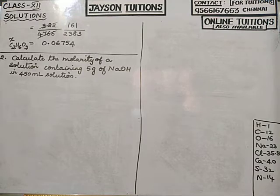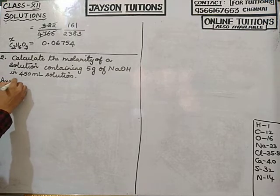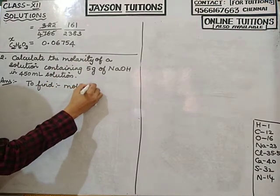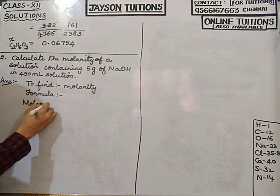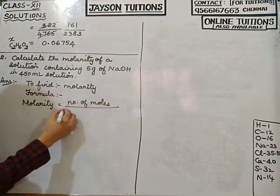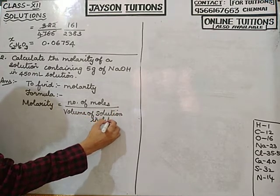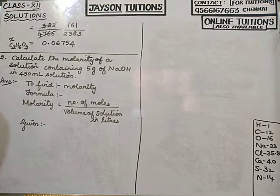Next problem: calculate the molarity of a solution containing 5 grams of NaOH (sodium hydroxide) in 450 ml solution. To find: molarity. The formula for molarity is: molarity equals number of moles divided by volume of solution in liters.